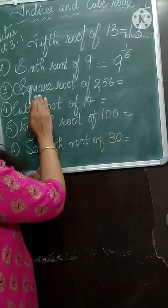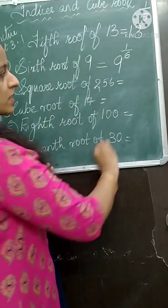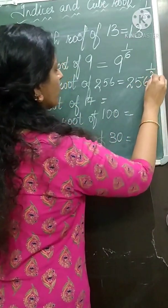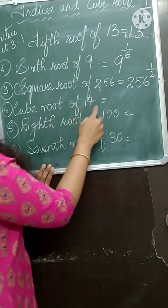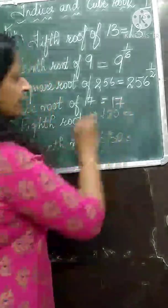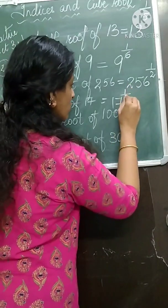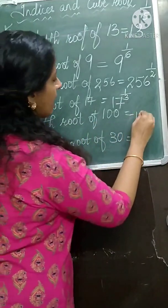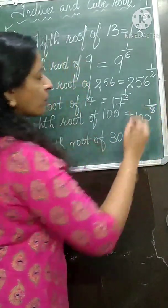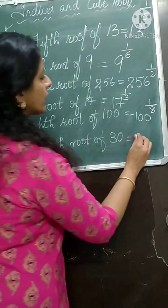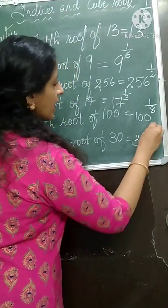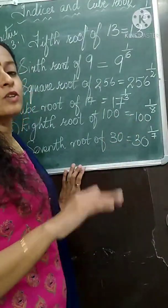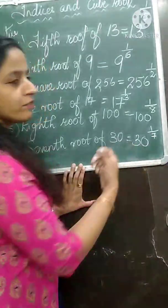Now let us write the remaining questions in index form. Square root of 256 is written as 256 raised to 1 upon 2. Cube root of 17 is 17 raised to 1 upon 3, because cube means 3 but you write 1 upon 3 since root means denominator. Eighth root of 100 is 100 raised to 1 upon 8. Seventh root of 30 means 30 raised to 1 upon 7.